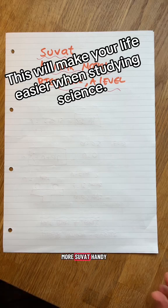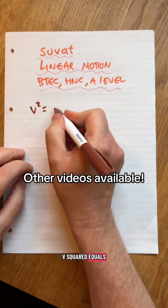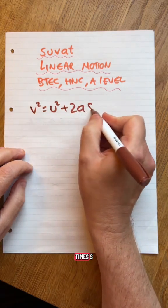More science, more linear motion, more SUVAT. Handy for HNCs, A-levels, BTECs. Here's the formula: V squared equals U squared plus 2 times A times S.